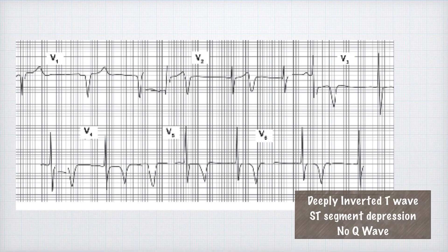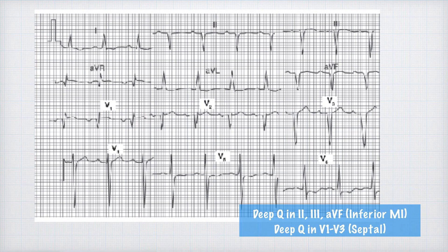Example ECG 1: deeply inverted T waves in chest leads V1 to V6, ST segment depression, and absent Q waves — diagnosis is NSTEMI or subendocardial ischemia. Example ECG 2: deep Q waves in leads II, III, and aVF representing inferior MI, and deep Q waves in leads V1 to V3 showing septal MI — this may be inferior MI with septal extension.